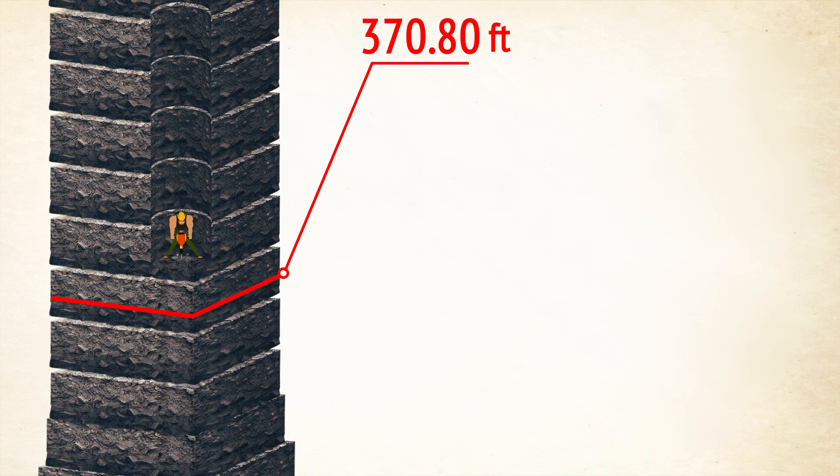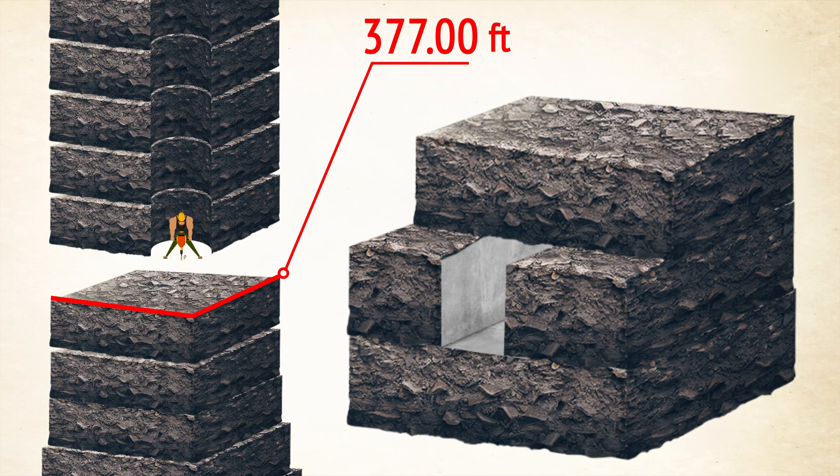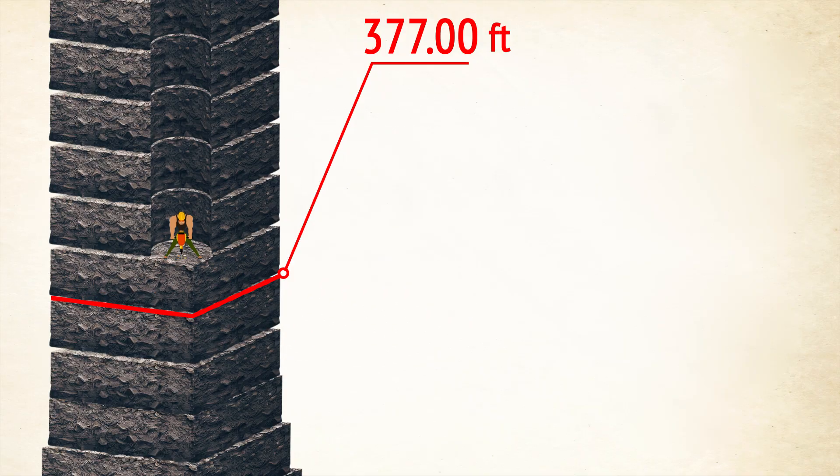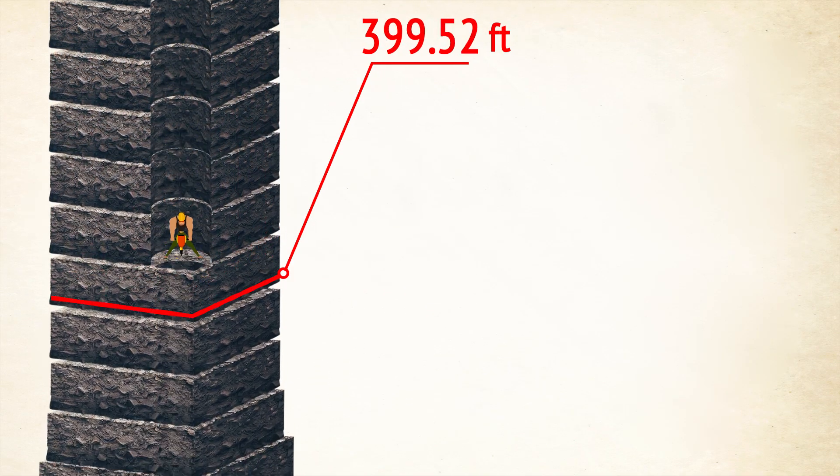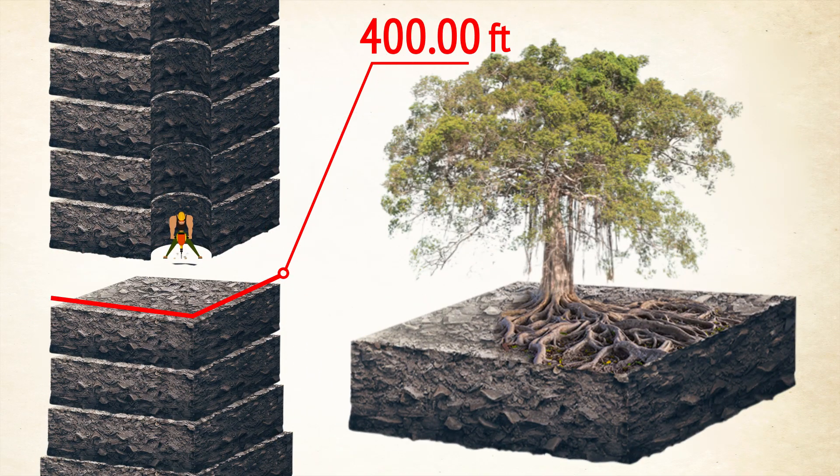The Channel Tunnel, connecting the UK with France, is situated at a depth of 377 feet. A wild fig tree that grows at the Echo Caves near Ohrigstad, South Africa, has the deepest roots known to people. They go down 400 feet.